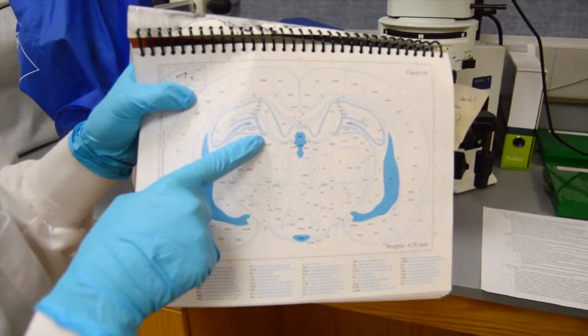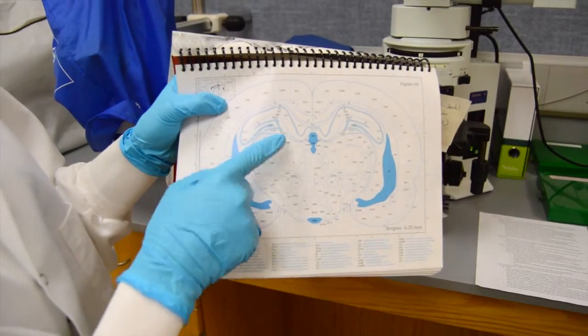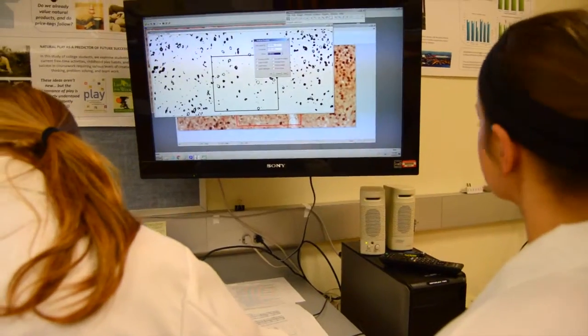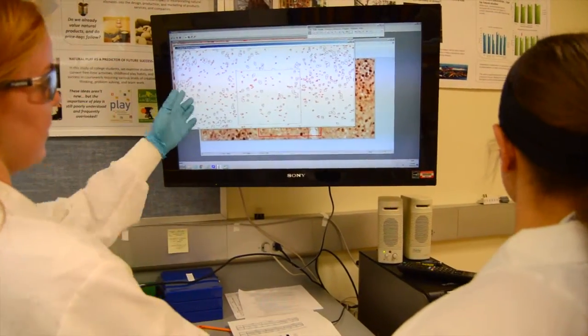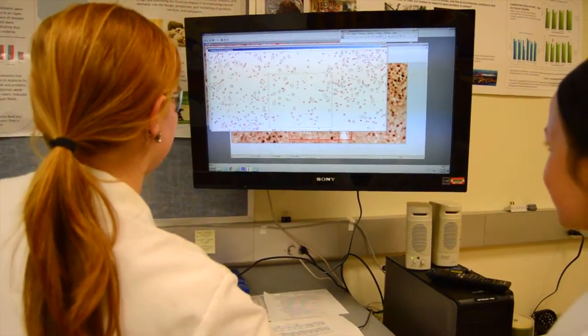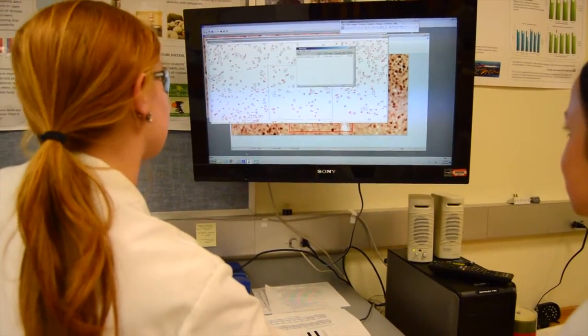Once the visualized field is selected for the image to capture, open ImageJ to analyze particles. Here, the darkly stained circles are the neurons to be counted. The results will appear in a new window and record it in an Excel sheet.